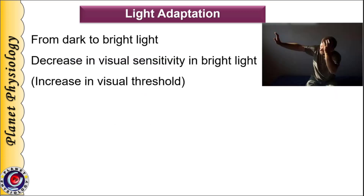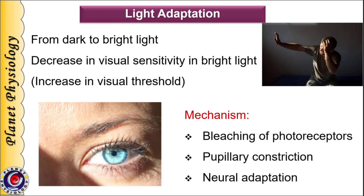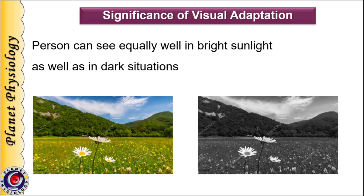Light adaptation is exactly the opposite process of dark adaptation. When a person moves to bright light after spending a long time in the dark — such as coming out of a movie theatre in afternoon light — the light appears too intense and uncomfortable. But within 5 minutes most of the rhodopsin is broken down and visual sensitivity is reduced. This reduction in visual sensitivity, or increase in visual threshold in bright light, is called light adaptation. It involves bleaching of photoreceptors, constriction of the pupil to reduce light entering the eye, and decreased convergence of rod signals. Light and dark adaptation together are generally known as visual adaptation to luminance.